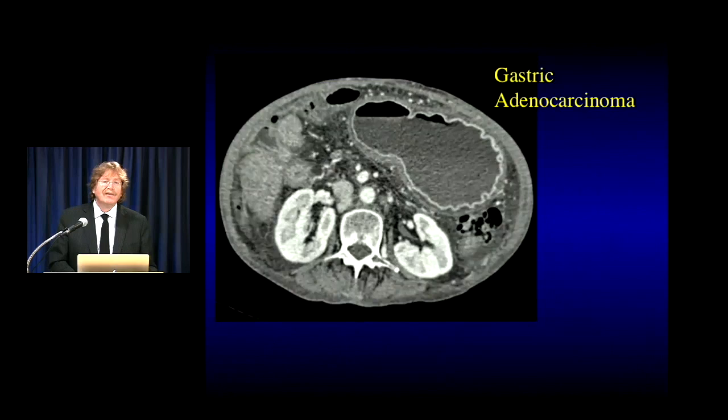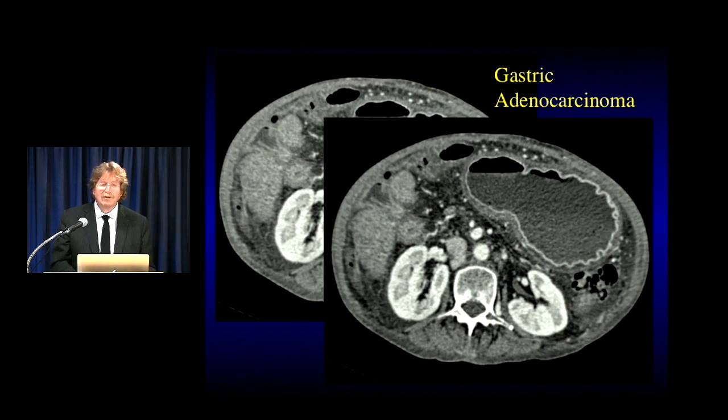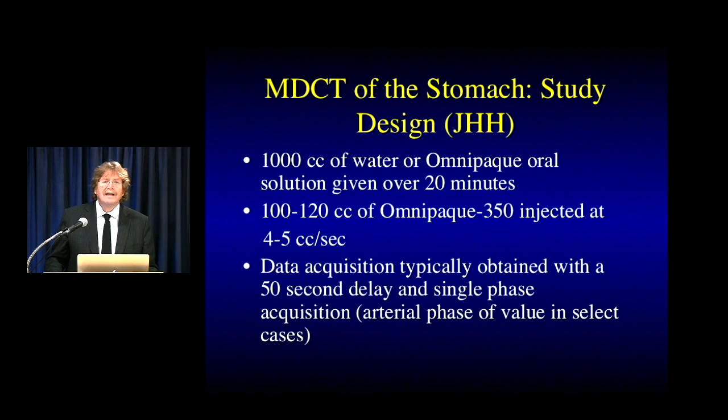When looking at the stomach, you'll often see mucosal enhancement. If you see a break in the enhancement, you have to worry about a tumor. When you have lesions in the antrum, coronal views are very helpful because otherwise you get partial averaging. You can see the stomach with ascites, and I'm concerned about carcinomatosis. In coronal view, you really nicely see the infiltration into the antrum — much easier to recognize, whether it's coronal MPR or volume rendering.